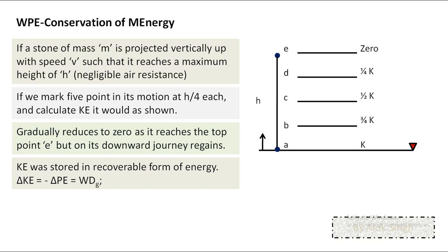This indicates the kinetic energy which appeared to have been lost was stored in some recoverable form of energy. We call that other form — where energy is temporarily stored — potential energy. So the change in kinetic energy equals the negative of the change in potential energy: when one decreases, the other increases.